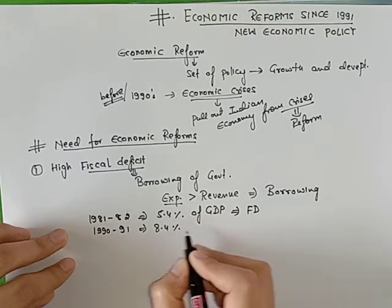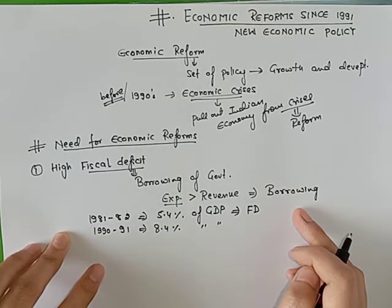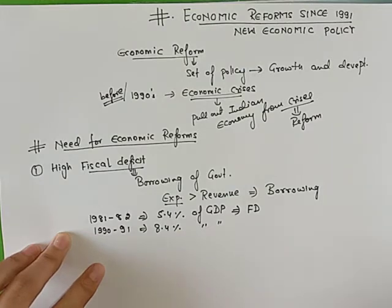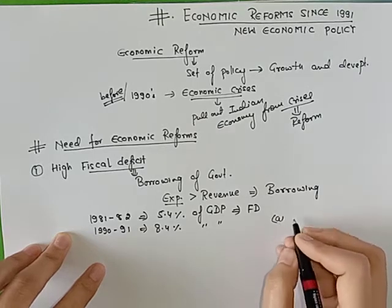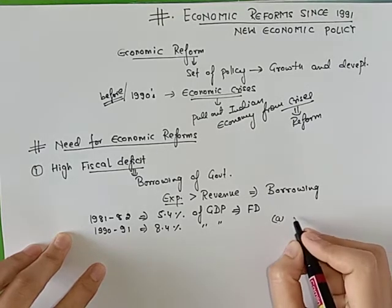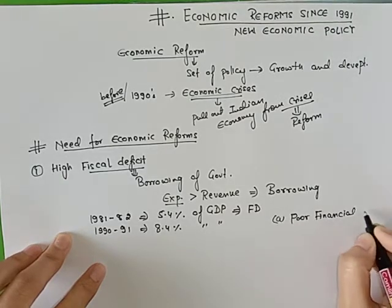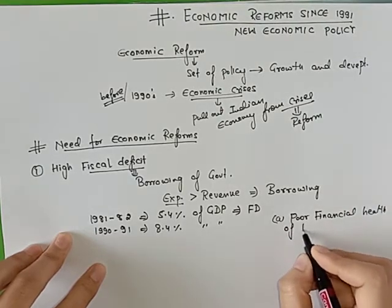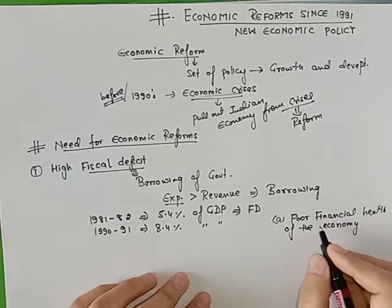The fiscal deficit became 8.4% of GDP, due to which the government's borrowing increased very much, and because of that, their interest payments also increased significantly. This shows that if the fiscal deficit in the economy is very high, it shows the poor financial health of the economy — because your economy does not have enough income, that is why you are borrowing.